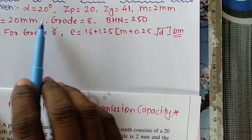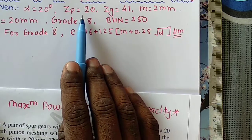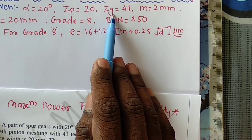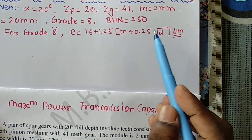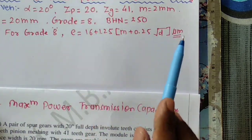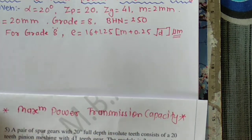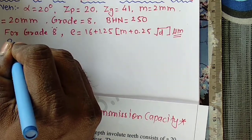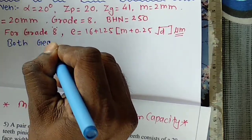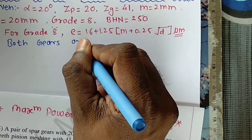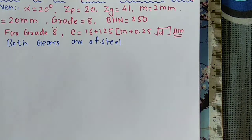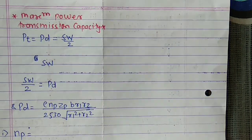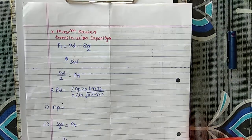I will write down the given data: pressure angle α = 20°; number of teeth on pinion ZP = 20; number of teeth on gear ZG = 41; module m = 2 mm; face width B = 20 mm; grade = 8; hardness BHN = 250. For grade 8, the error formula is given, and both gears are of steel.